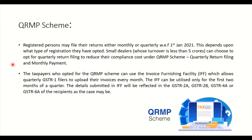Now, what is the QRMP scheme? Most people do not know what this is. QRMP stands for Quarterly Return Filing and Monthly Payment. It means you file returns quarterly but pay tax monthly. Registered persons may file their returns either monthly or quarterly with effect from 1st January 2021. This is important because small dealers whose turnover is less than 5 crores can choose to opt for quarterly return filing to reduce their compliance cost.